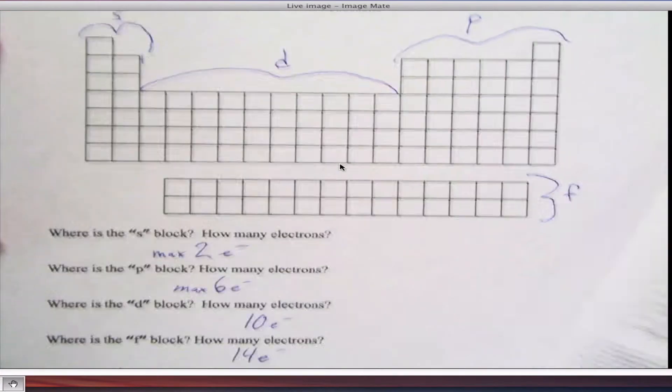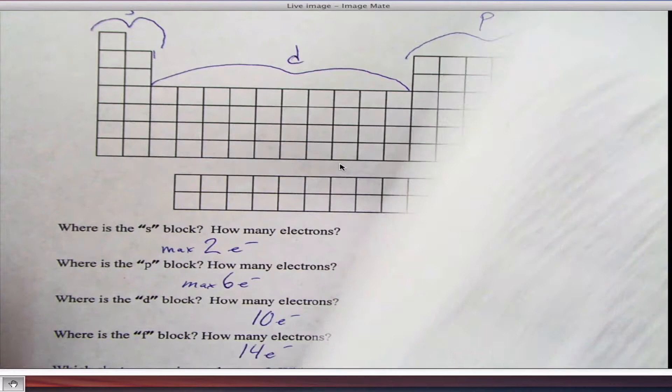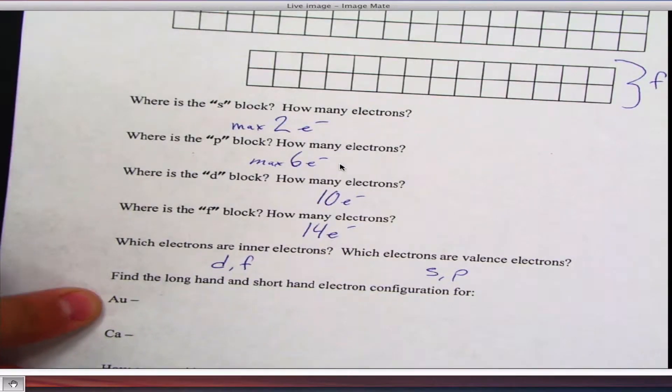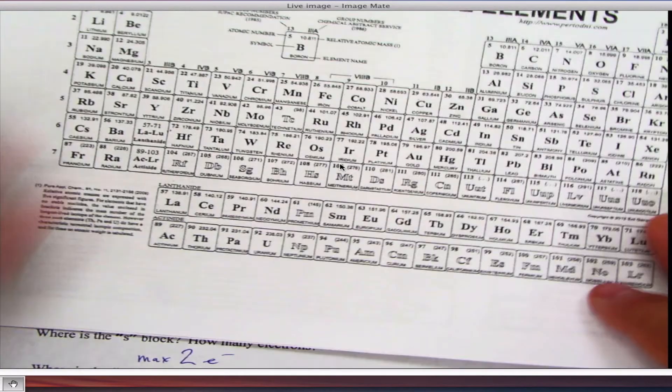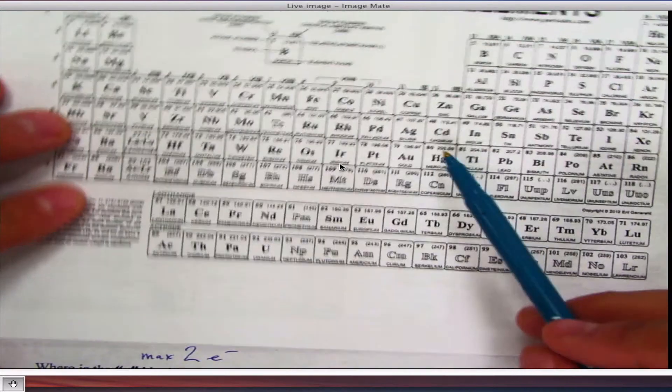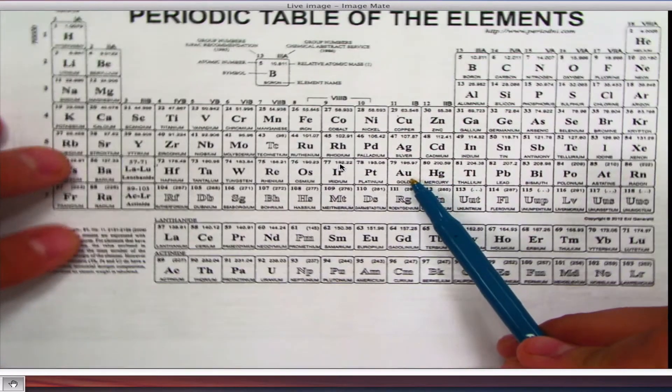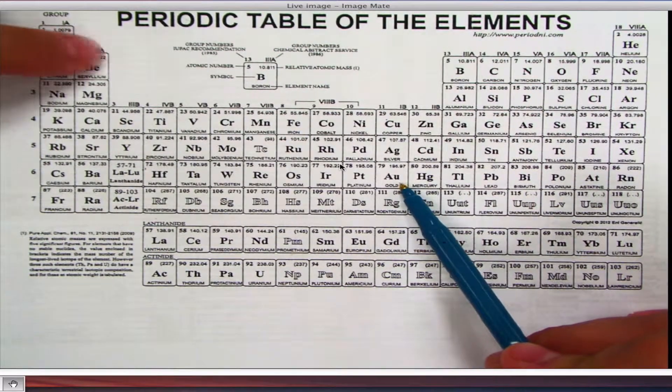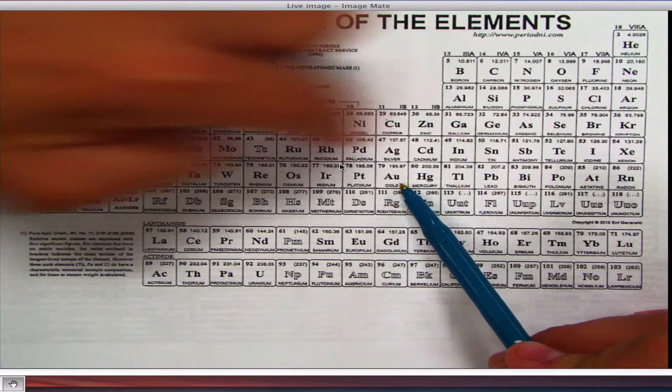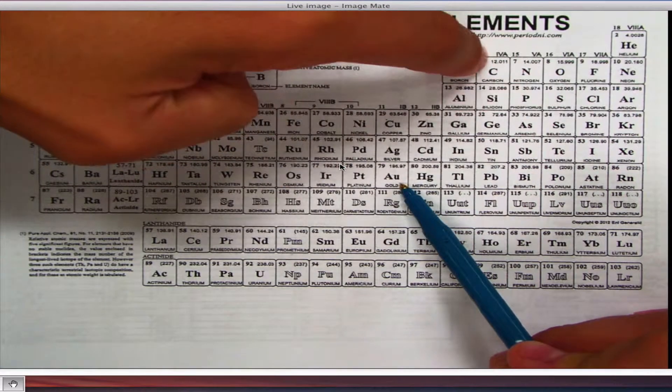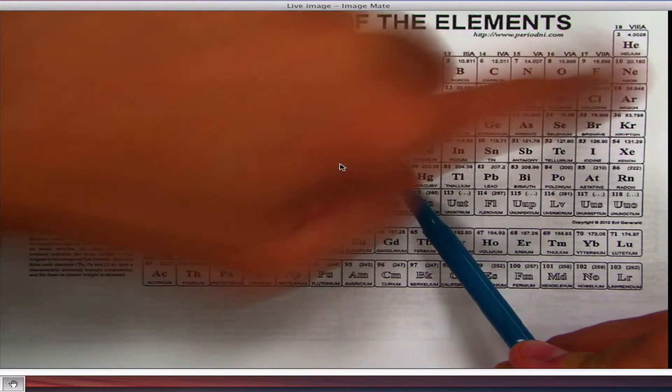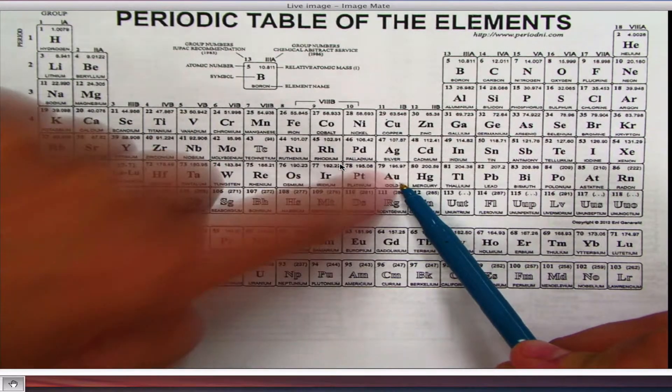So here's how it works out. Let's find gold. We'll find gold first. So gold is right here. Way down here. So now, if I look at my shape, here's my S blocks. Here's my D block. Here's my P block. Right here. And here's my F block on the bottom. So I've got to go all the way through these elements until I get to this.